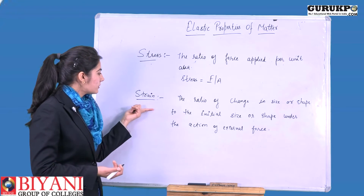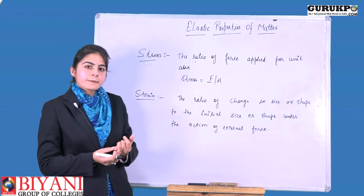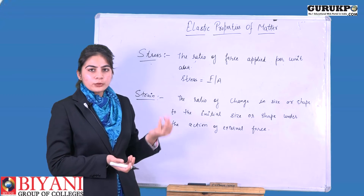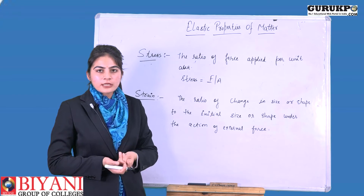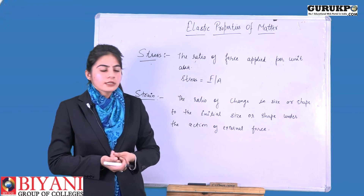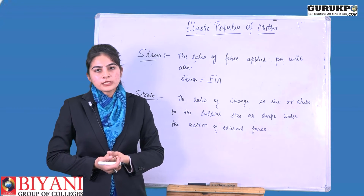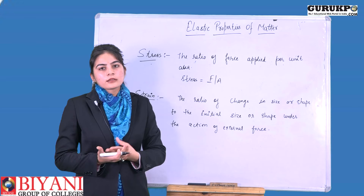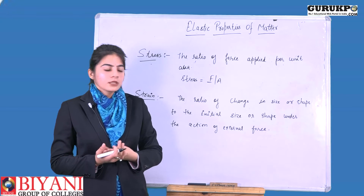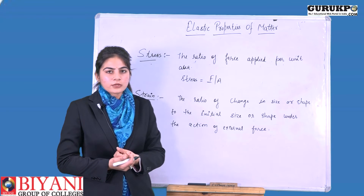Stress and strain are each of three types. For stress: first is longitudinal stress, second is volumetric or bulk stress, and third is tangential or shearing stress. Similarly, strain also has three types: first is longitudinal strain, second is bulk or volumetric strain, and third is tangential or shearing strain.